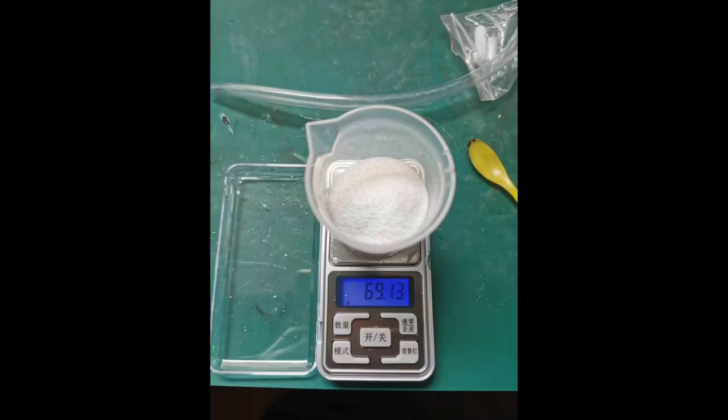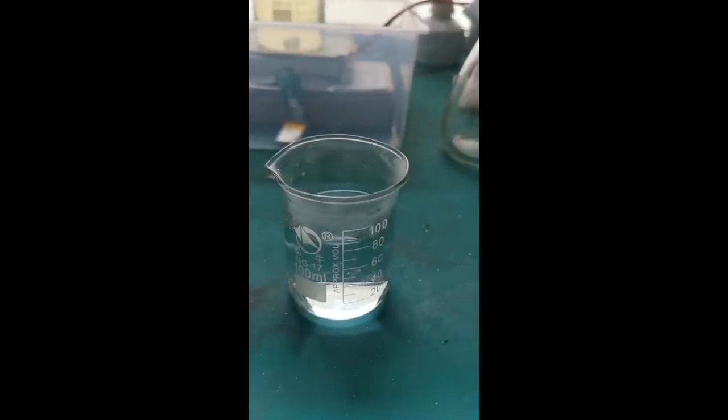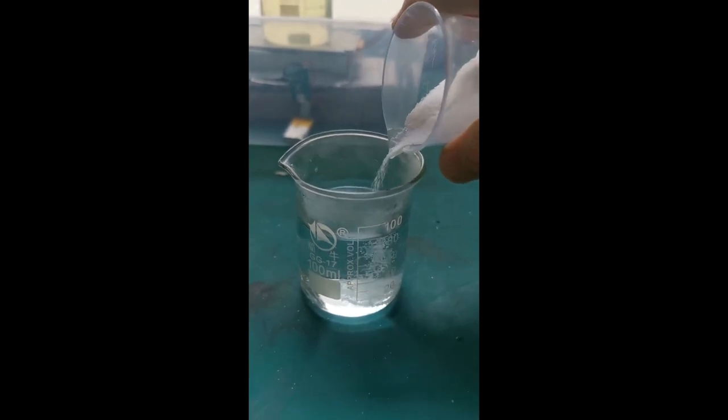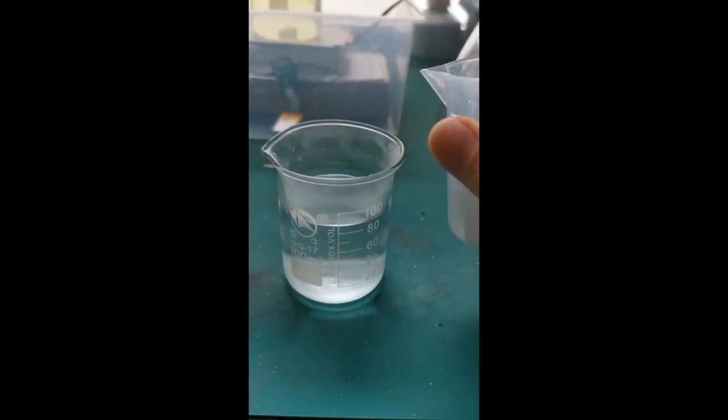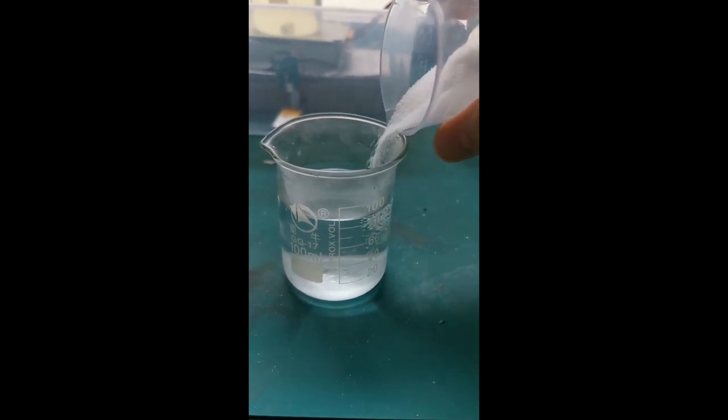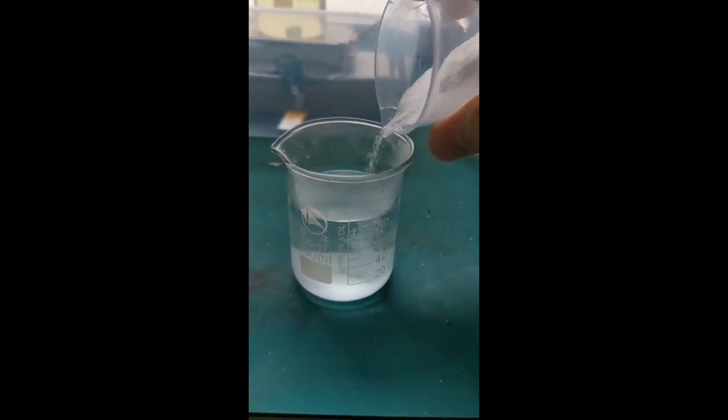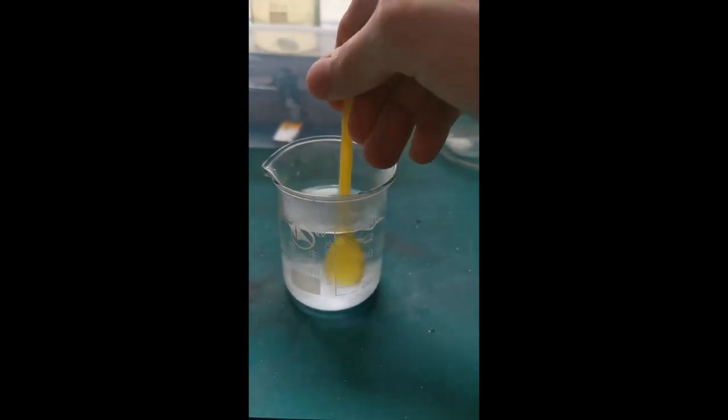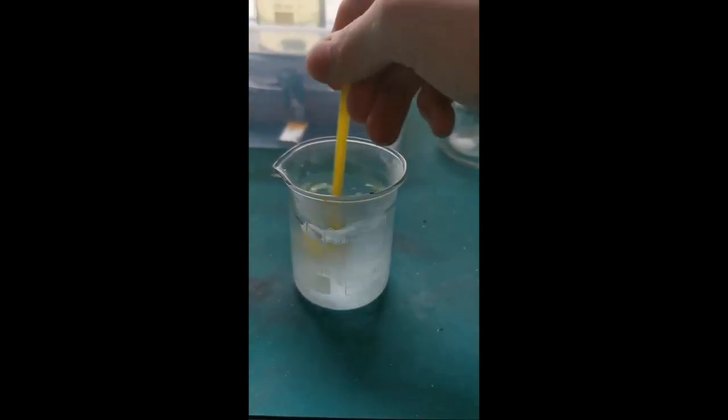Next, I measured out 69.13 grams, or half a mole, of anhydrous potassium carbonate, and dissolved it in 80 milliliters of boiling water as well. The dissolution of the salt was quite similar to calcium chloride, but not as vigorous. I still stirred the solution a little to dissolve the salt. The solution produced was crystal clear.